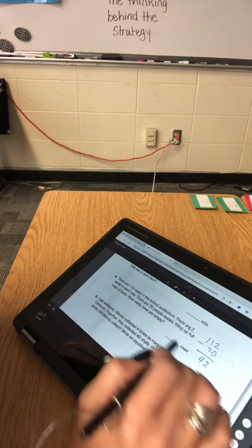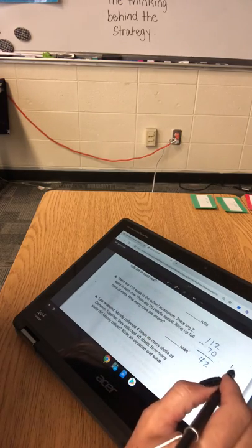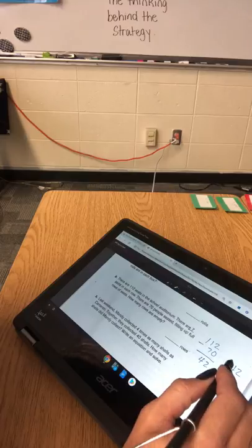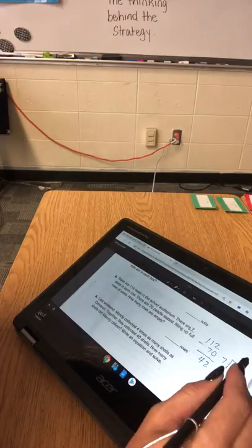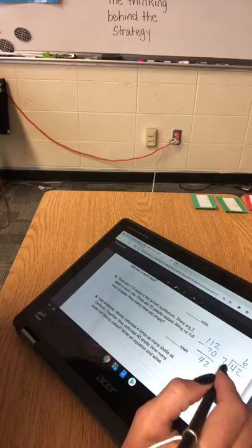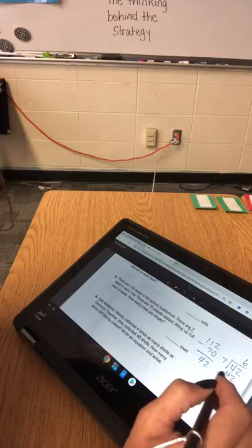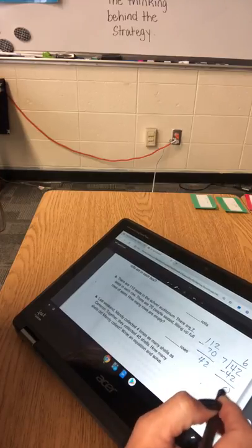There are seven seats in each row. So if we take 42 and we divide that by 7, 7 goes into 42 6 times. 6 times 7 is 42. 42 minus 42 is 0.